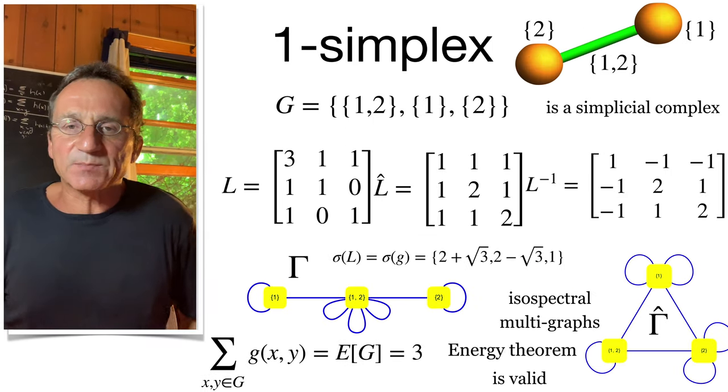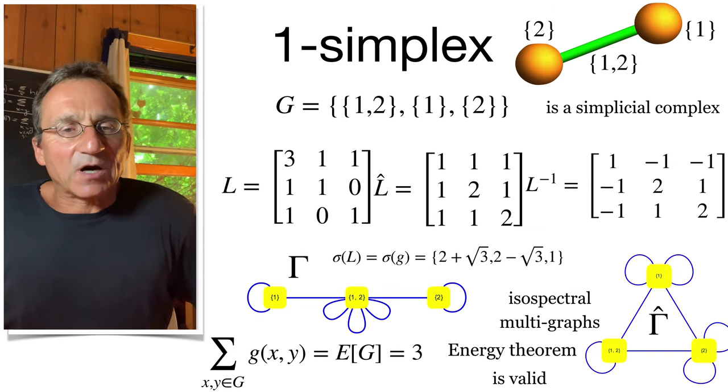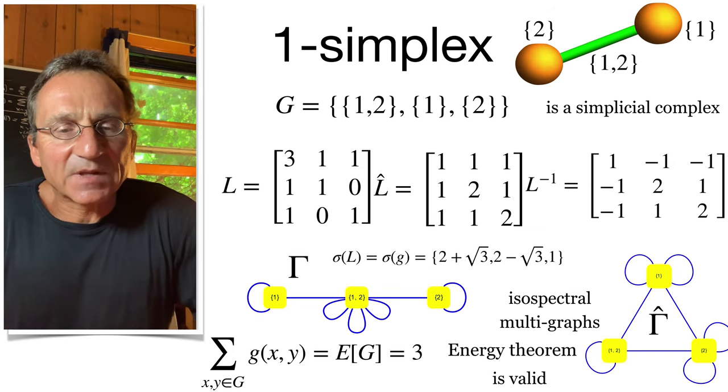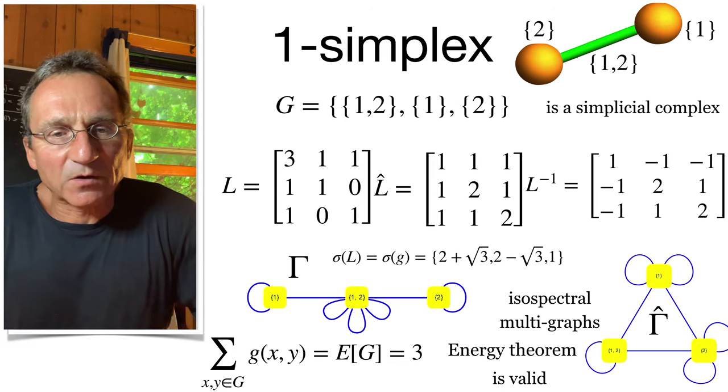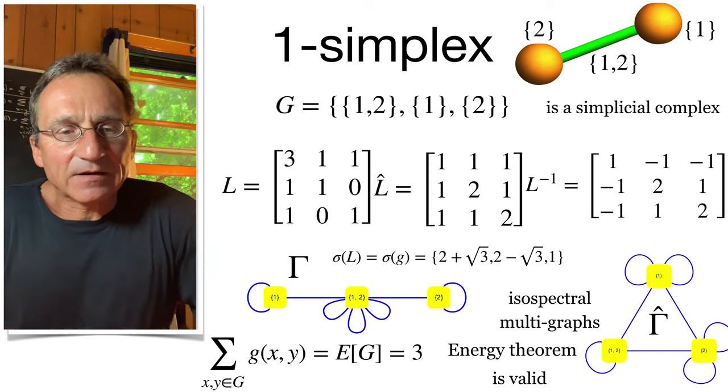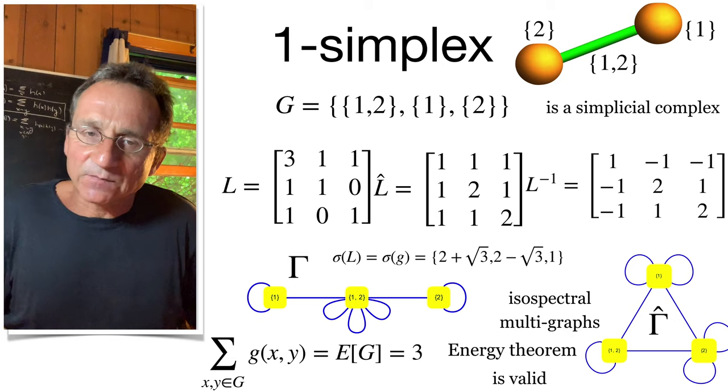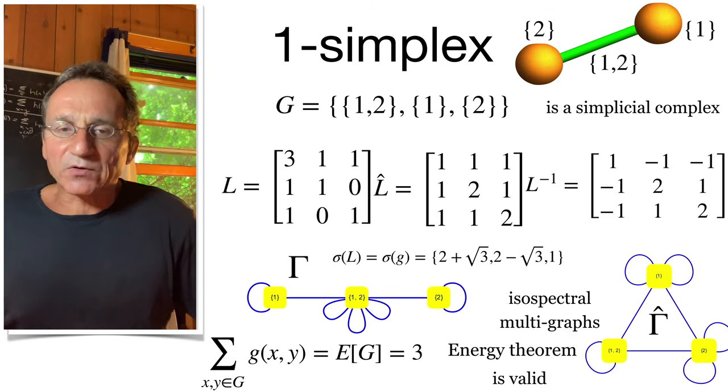This is the smallest simplicial complex. It already produces isospectral graphs which are not isomorphic. So here are the two quadratic forms. The inverse is conjugated to L-hat. And the energy theorem holds: the sum of the matrix entries of L-inverse is the total number of sets.